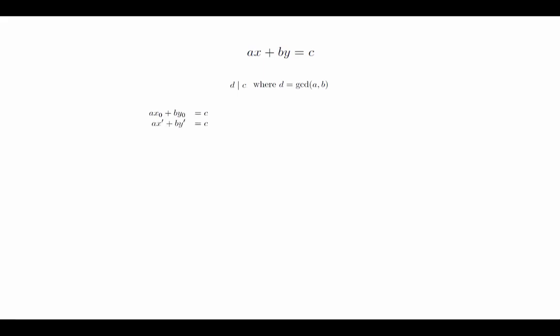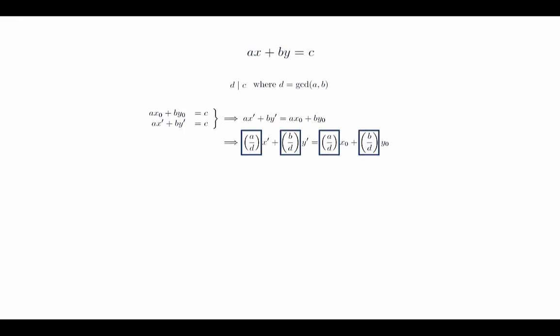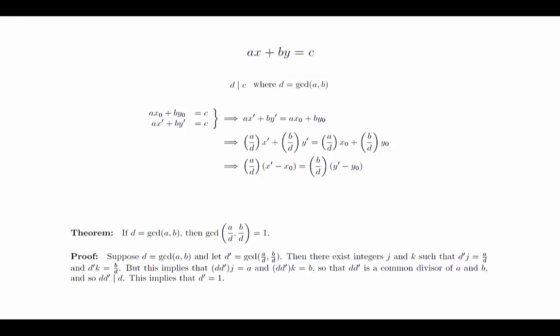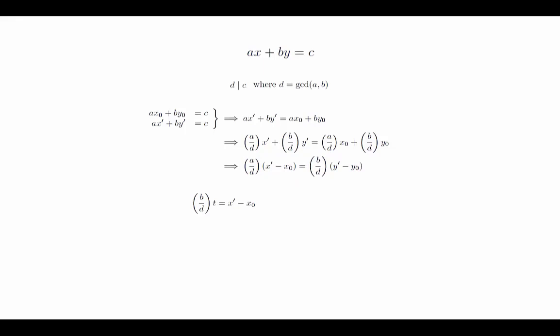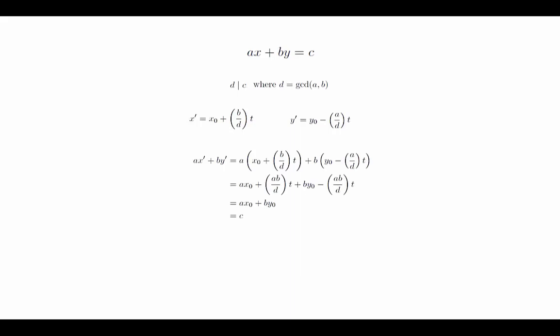Now suppose that there is another solution (x', y') to the equation ax plus by equals c. We can set these two equations equal to each other and divide both sides by d. Notice that the terms inside the parentheses are integers since d divides both a and b. We can then rearrange the equation. It can be shown that if d equals the GCD of a and b, then the GCD of a over d and b over d is 1. Therefore, by theorem 2-3, we have that b over d divides x' minus x0. This means that there exists an integer t satisfying this equation. Also, by plugging this back into the equation above and doing some algebra, we get the form of y'. We can show by direct substitution that every pair (x', y') of this form must be a solution to the equation ax plus by equals c.